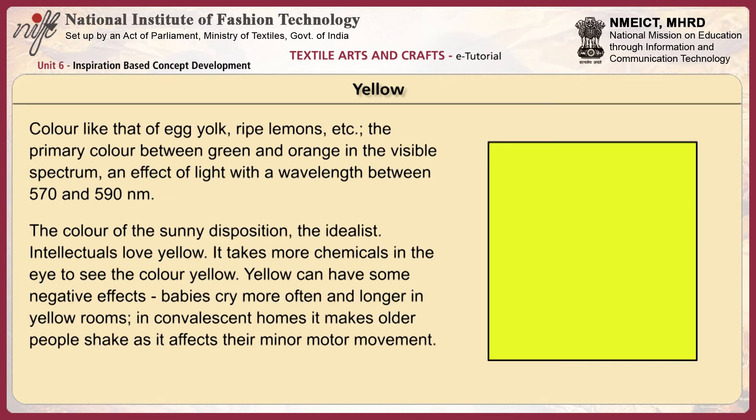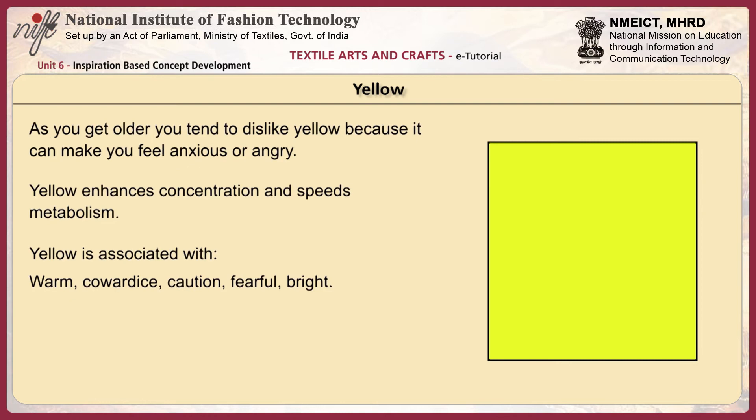Yellow is the color of egg yolk and ripe lemons — the primary color between green and orange in the visible spectrum, with a wavelength between 570 and 590 nm. It is the color of sunny disposition and the idealist; intellectuals love yellow. It takes more chemicals in the eye to see yellow. Yellow can have negative effects: babies cry more often in yellow rooms, and in convalescent homes it makes older people shake as it affects their minor motor movement. As you get older, you tend to dislike yellow because it can make you feel anxious or angry. Yellow enhances concentration and speeds metabolism.